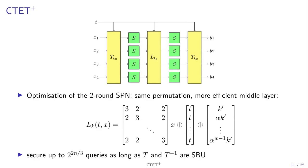Our first contribution in this work is to introduce CTET+, which is an optimization of the two-round SPN that I presented earlier. First, we reuse the same permutation in both non-linear layers of the construction. And then, we also remark that it's possible to use a much more efficient linear middle layer instead of using T for the three linear layers. Namely, we show that in the middle linear layer, T can be replaced by a much simpler linear layer L which doesn't rely on a keyed matrix multiplication, and that the resulting construction is still secure up to 2^(2n/3) queries as long as both T and T^(-1) are SBU.